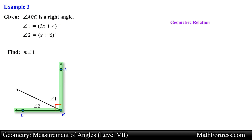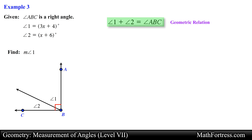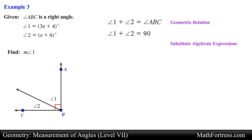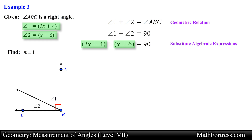Notice that angle ABC is formed by angle 1 and angle 2. This means that adding the measurement of angle 1 and angle 2 should equal the measurement of angle ABC. Since angle ABC is a right angle, we set the sum of angle 1 and angle 2 equal to 90. We are given algebraic expressions for angle 1 and angle 2, so let's substitute these expressions into our geometric relation.